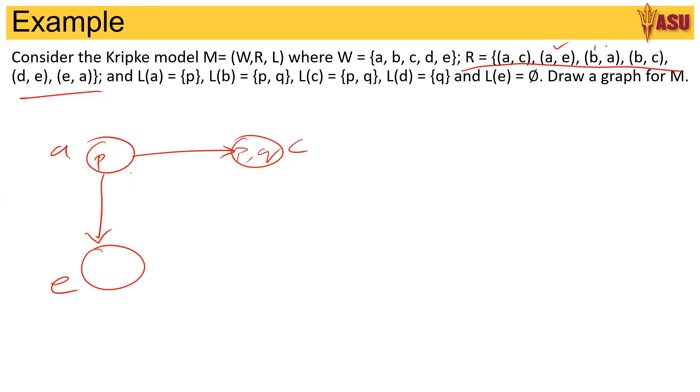The next rule is B goes to A and also you have B goes to C. Let me draw this here. Now the language of B is P, Q.